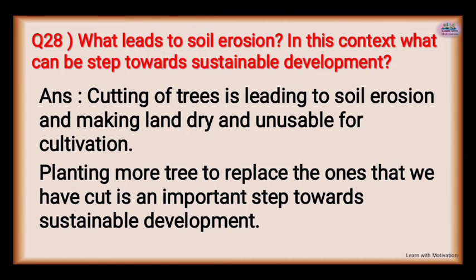What leads to soil erosion and what step can be taken toward sustainable development? Cutting of trees is leading to soil erosion and making land dry and unusable for cultivation. Planting more trees to replace the ones that have been cut is an important step towards sustainable development.